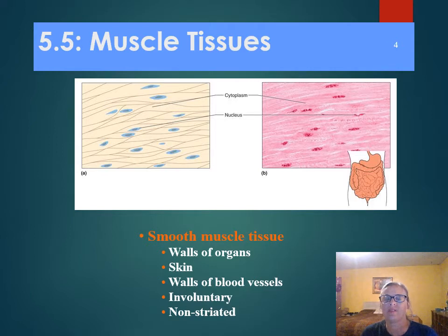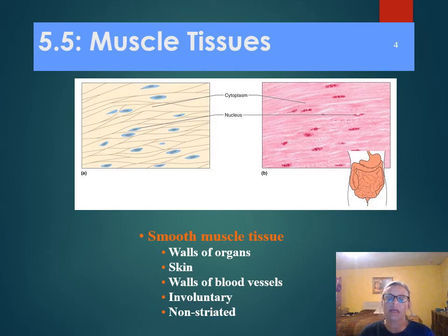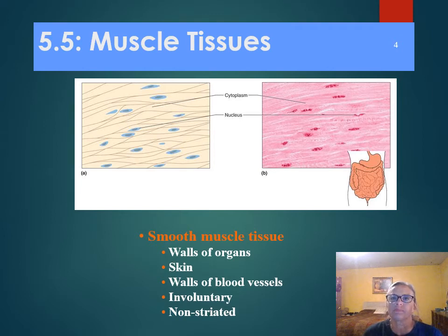Smooth muscle cells are shorter than skeletal cells — not quite as long and stretched out. These are going to have a single centrally located nucleus, which is really important for identification. We talked about skeletal being multi-nucleate, meaning they had several nuclei in cells, not one nucleus per cell. That's just because of the way they differentiate early on. We cannot consciously stimulate these muscle cells to contract.